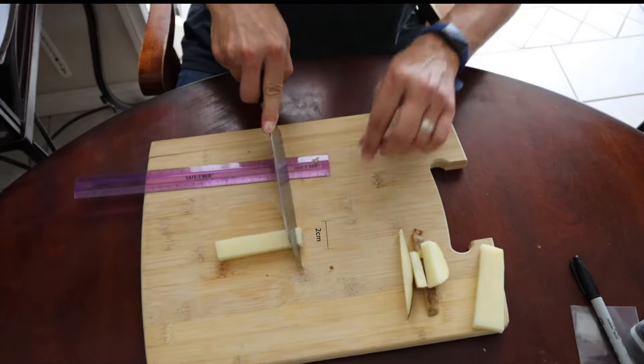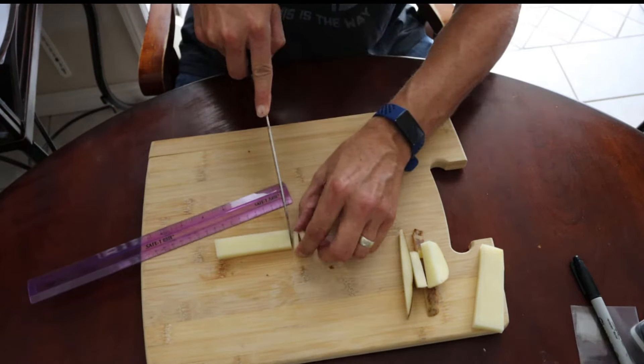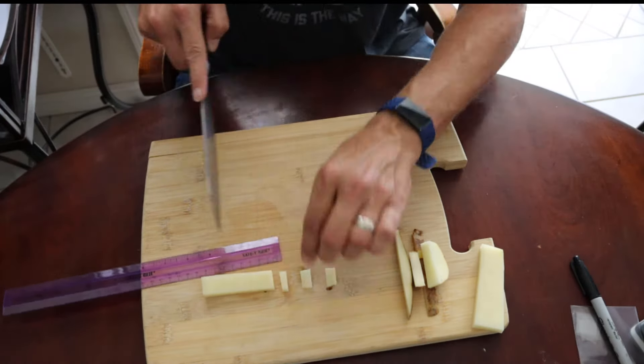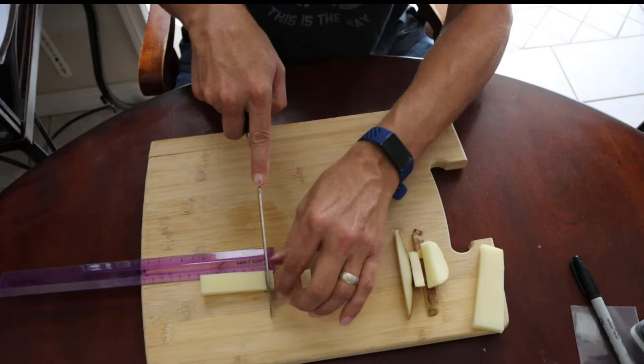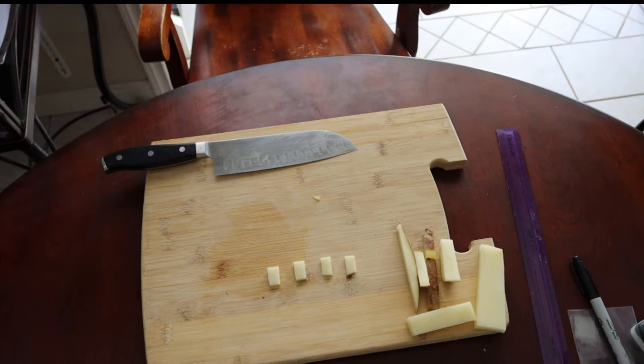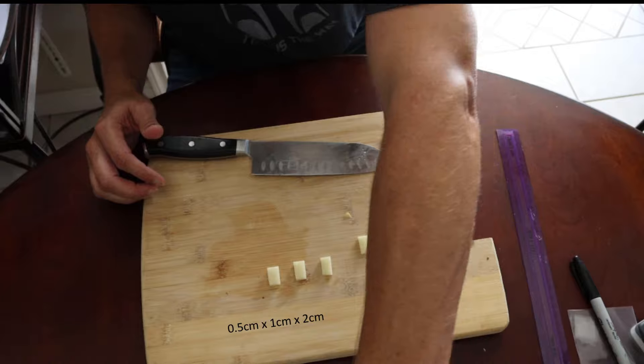Then we cut a two-centimeter section and then we cut four half-centimeter sections like you see there. And again this is high speed, so I'm really not cutting this quick. The result at that point is we have our four pieces of potato—one, two, three, and four—and they are one centimeter by two centimeters by half a centimeter.